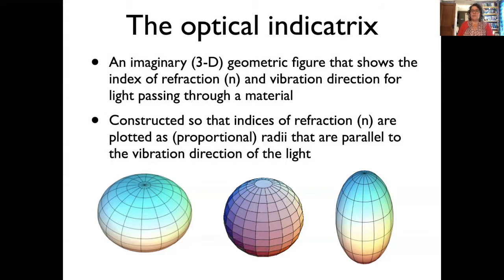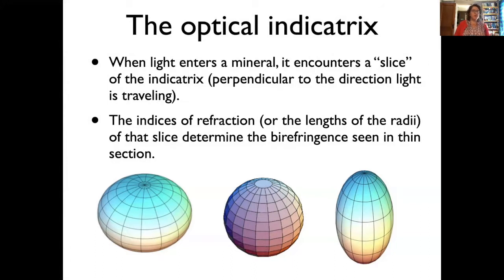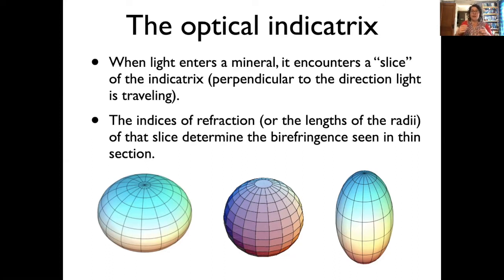We're going to talk about three of these shapes today. Remember that when light enters a mineral — particularly in thin section — it encounters a slice of the indicatrix. Depending on how the light enters the mineral, perpendicular to that direction is a slice, and the indices of refraction or the lengths of the radii of that slice determine the birefringence we'll see in thin section.